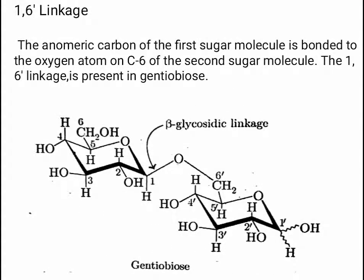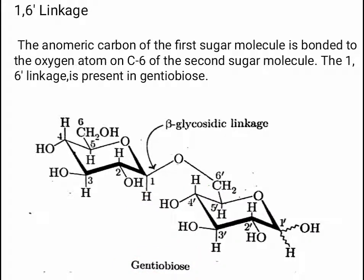The 1,6'-linkage: the anomeric carbon of the first sugar molecule is bonded to the oxygen atom on C6 of the second sugar molecule. The 1,6'-linkage is present in gentiobiose. In gentiobiose, C1 is the acetal carbon and C1' is the hemiacetal carbon, and C6' provides its OH for the bonding.